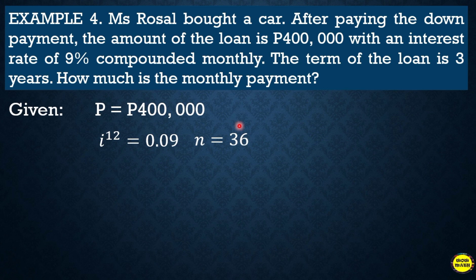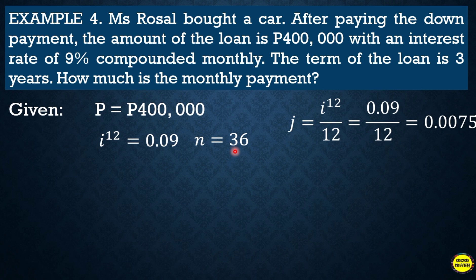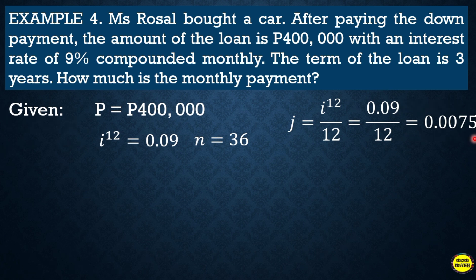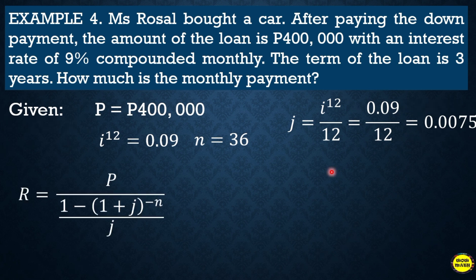Since the payment is monthly, n = 36. The rate of interest per period, j = i/m = 0.09 ÷ 12 = 0.0075, since it is compounded monthly with m = 12.